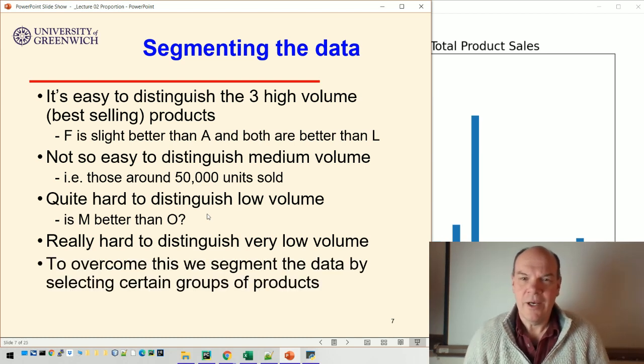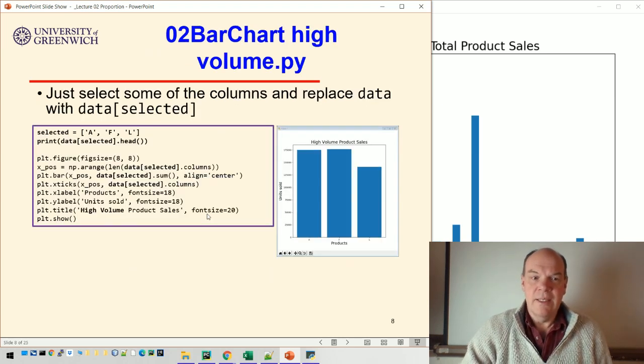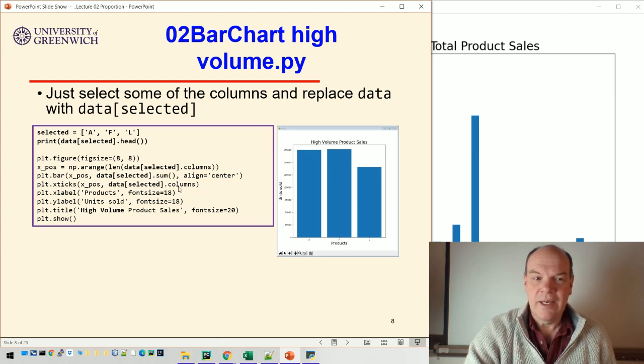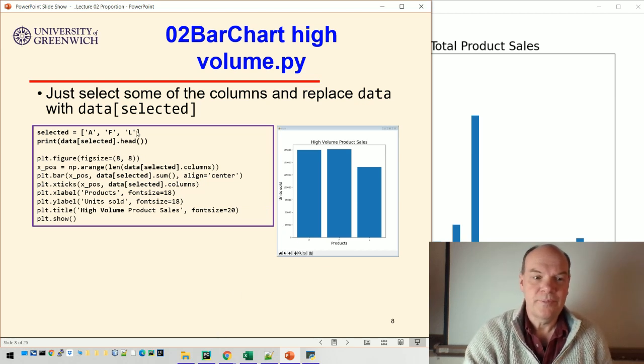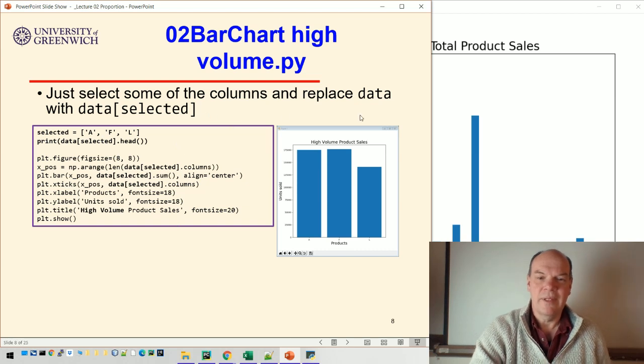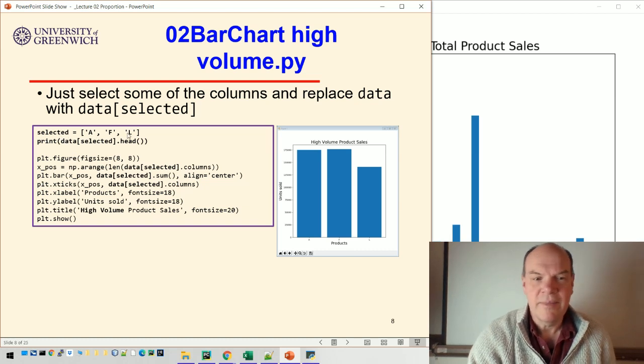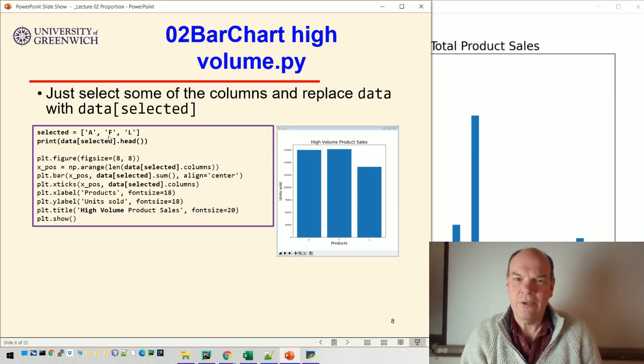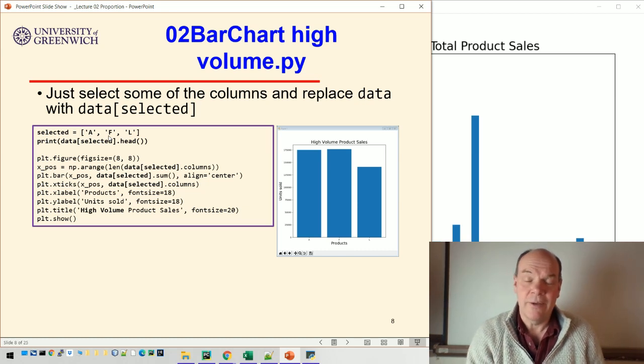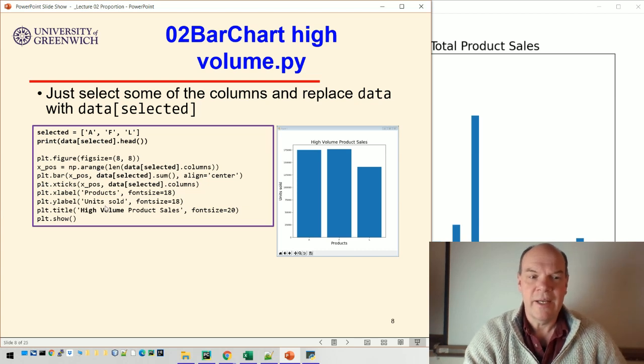So in order to overcome that, as I mentioned last week, a really common thing is to segment the data. So we split it into groups. In this case, we're going to split it into high volume and low volume and medium volume sales. So one way of doing that is just to use a list of the columns that we know are high volume. So here's the code that will just draw those high volume columns. So it's just a bar chart with three columns in this case. And I decide what columns they are, they're A, F and L. Remember last week, we saw different ways of doing that. We could select them by value, so we could select anything over say a hundred thousand sales, but this is a more explicit way of doing that. We're saying it's going to be columns A, F and L.